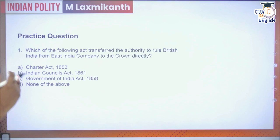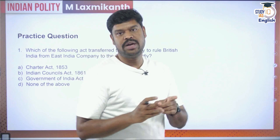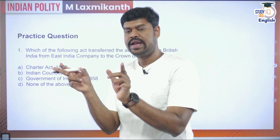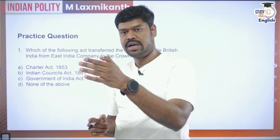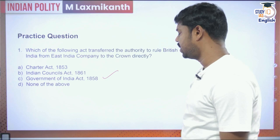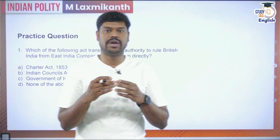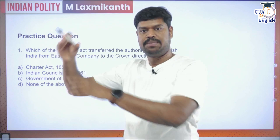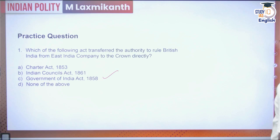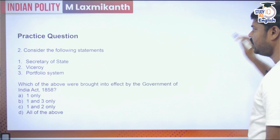Question 1: Which act transferred authority from the East India Company to the Crown directly? The company rule ran from 1773 till 1857. After the Sepoy Mutiny of 1857, the British Parliament passed the Government of India Act 1858, transferring administration directly to the British Crown. New authorities like the Secretary of State were introduced, and the Governor General was renamed Viceroy, who reported to the Secretary of State — a member of the British Cabinet responsible to Parliament. The answer is option C.